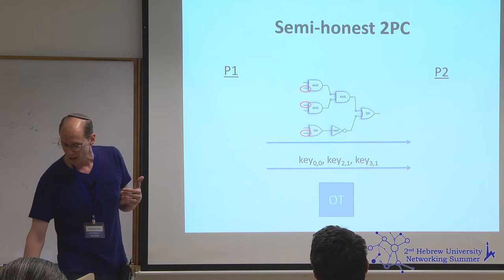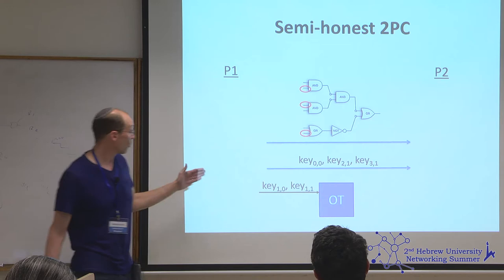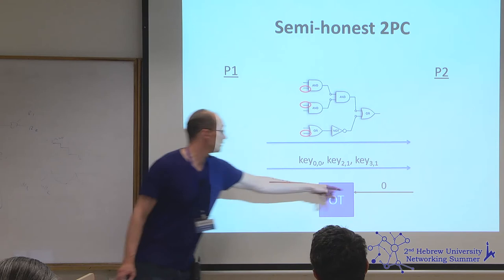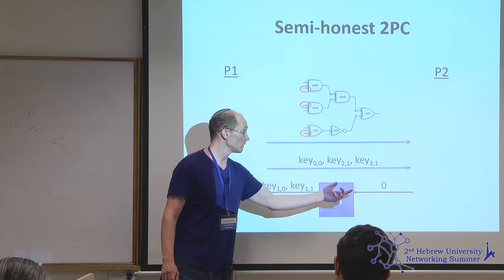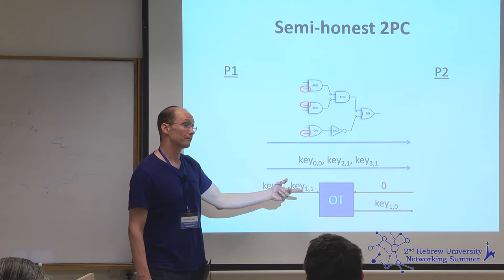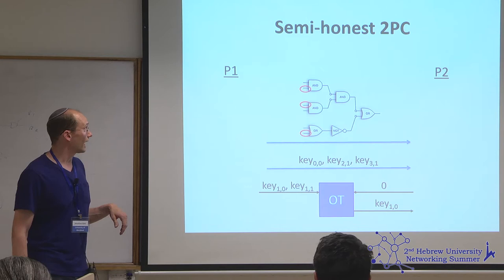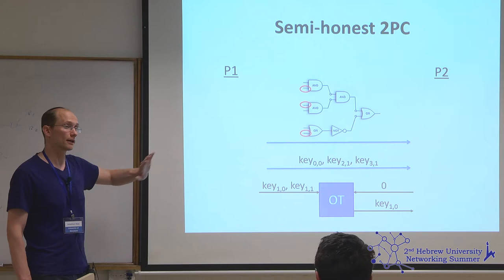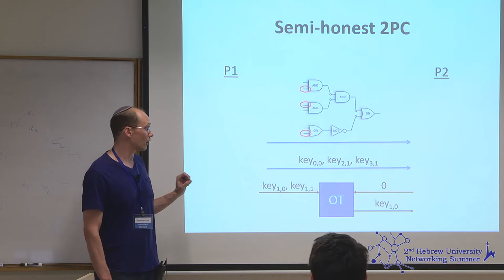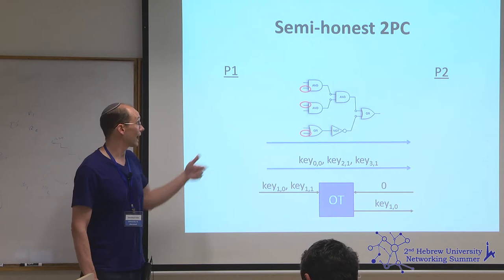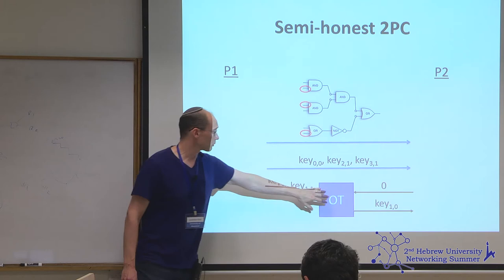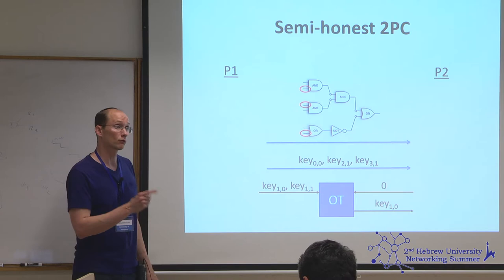So we use another magical tool called oblivious transfer, which allows P1 to send the two possible keys for each wire, P2 to send the value of its input bit for that wire, and then learn exactly the corresponding key — while P1 learns nothing. OT was invented by Michael Rabin for different applications, but it turns out to be a key component of secure computation protocols, because it allows selection of one out of two secrets: P1 learns nothing and P2 learns exactly one of the two secrets.